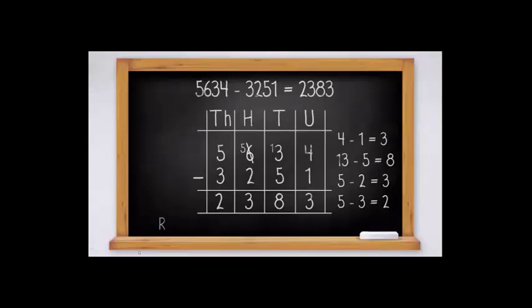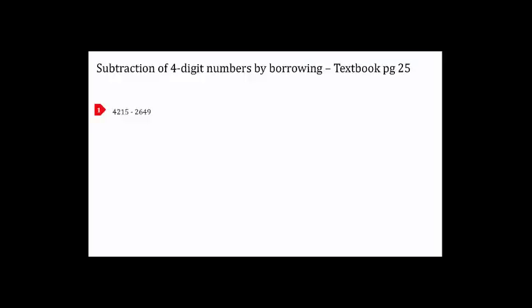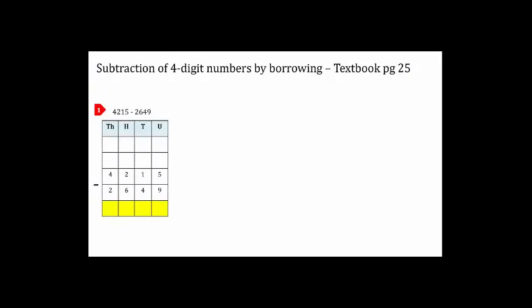We can use this method for higher numbers of digits. Remember to use place value headings, arrange in columns, and always write the first number on top. We will now solve the first sum: 4215 minus 2649. Arrange in columns with place value headings. Start from the units place: five minus nine.